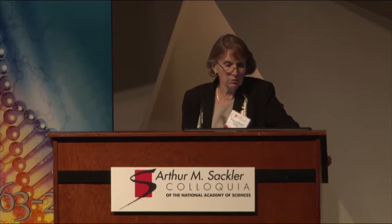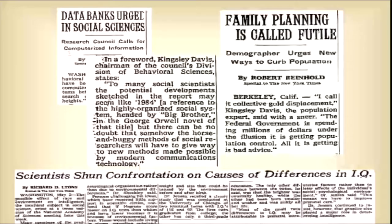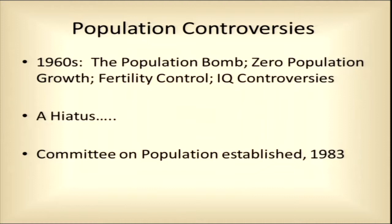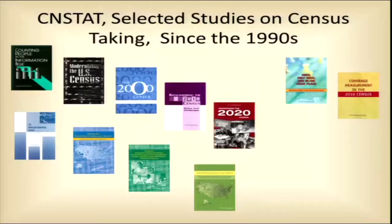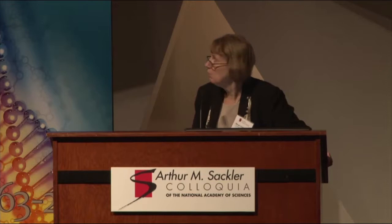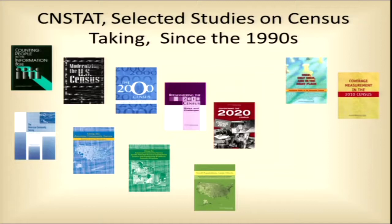The upshot is that when the committee is established in 1983, it does not trace its legacy back to those earlier issues. What I want to conclude with is just an image of the reports. SINSTAT has produced 242 public reports since its founding — 181 of them in the last 20 years. These are the reports from the census and the American Community Survey, as well as some of the technical issues. They have produced 'Principles and Practices for a Federal Statistical Agency' — this is the fifth edition of that publication.